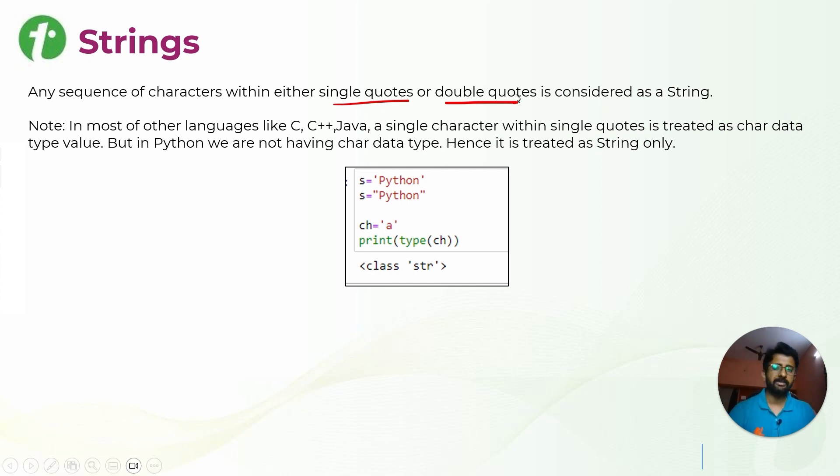In most languages like C, C++, Java, a single character within single quotes is treated as character data type. But in Python we are not having char as a data type, so it is treated as string only.